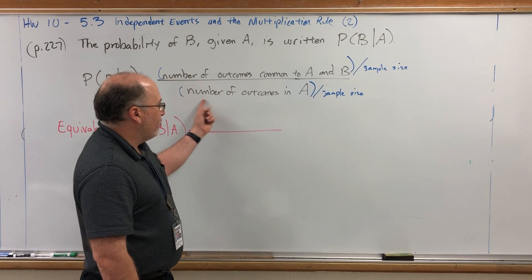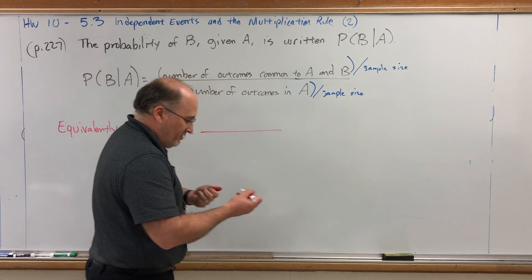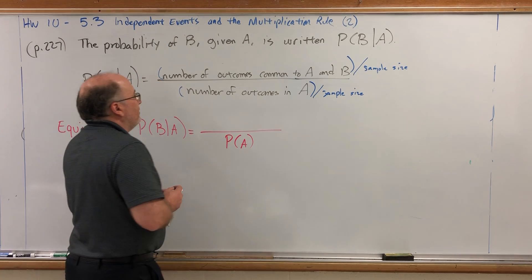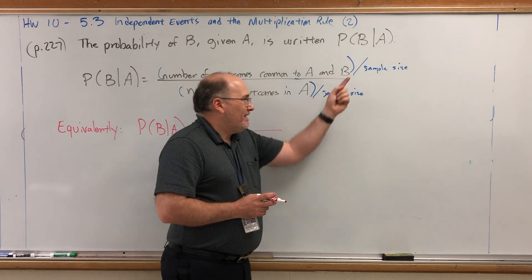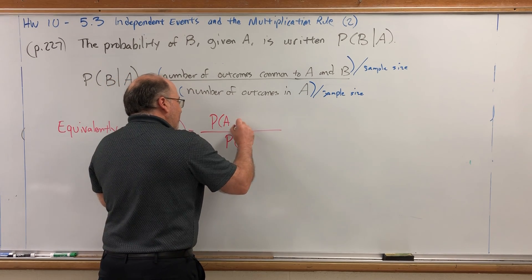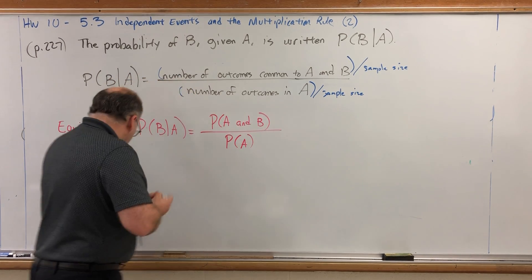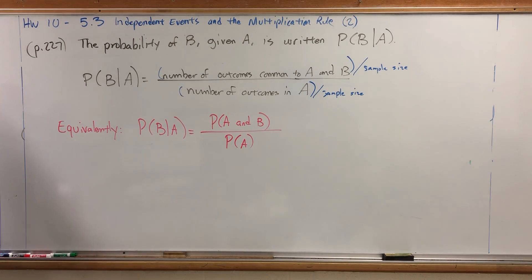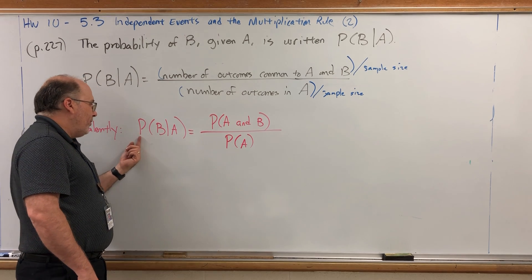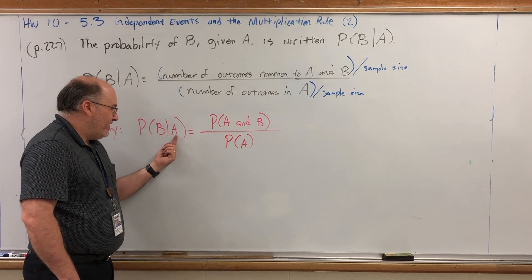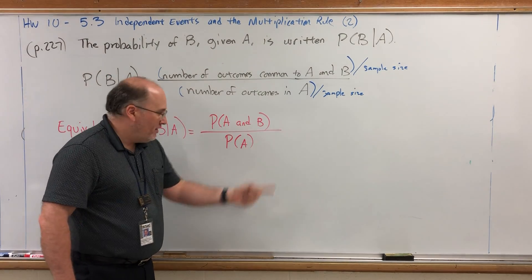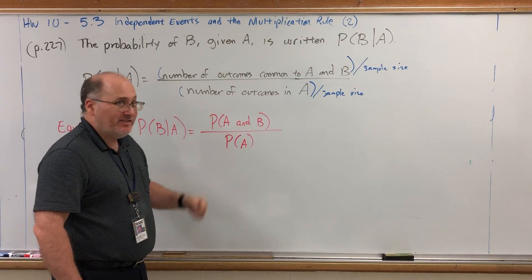The denominator is the number of outcomes in A compared to the sample size. That's just the probability of A. And the numerator is the number of outcomes in A and B compared to the sample size. That's just the probability of A and B. So, you can also calculate a conditional probability as a ratio of two probabilities. The probability of B, given that A has occurred, is the probability that A and B occur simultaneously compared to the probability that A occurs.